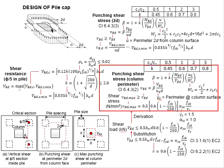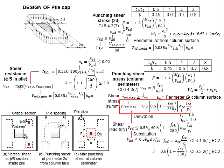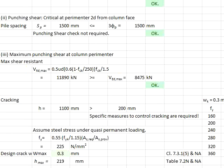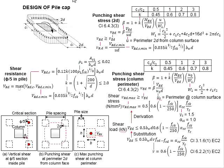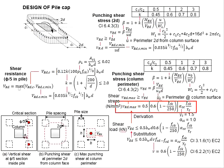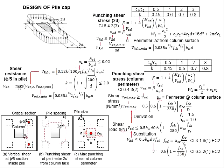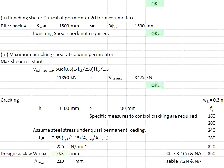Punching shear at the column perimeter is done using the relevant equations. First, determine the shear resistance using the formula. Note that the formula in the spreadsheet differs slightly — it needs to be multiplied by u and d to obtain shear load rather than shear stress. The perimeter u is equal to 2 times b plus 2 times h. Substituting into the equations gives a punching shear resistance of 11,890 kilonewtons.